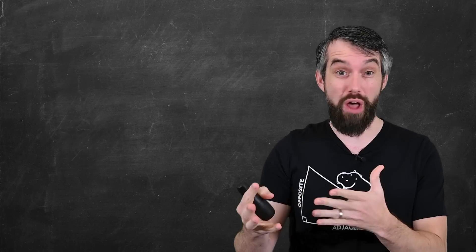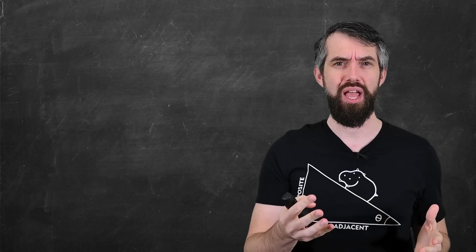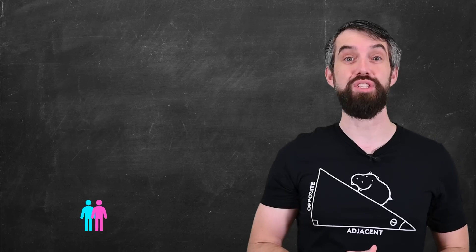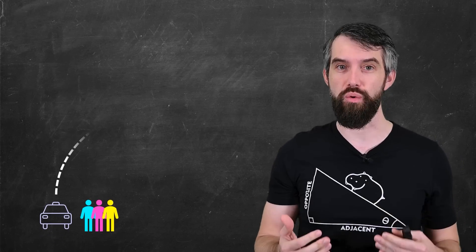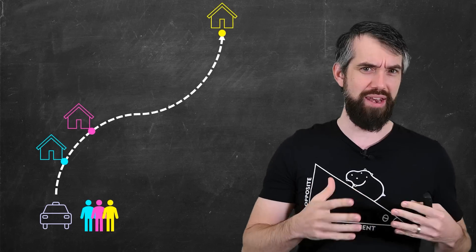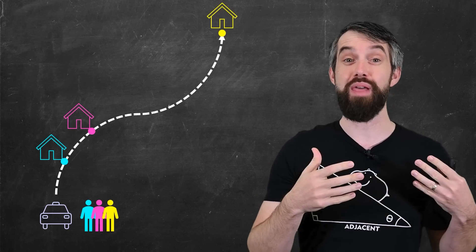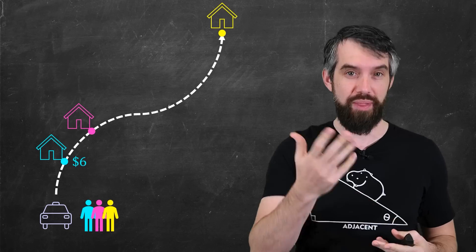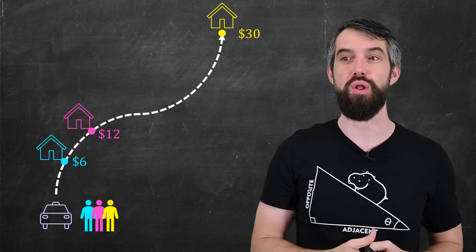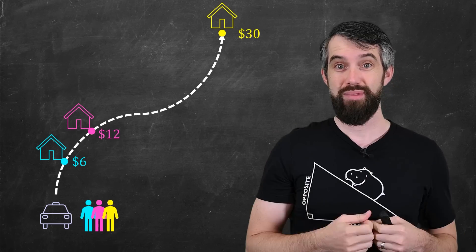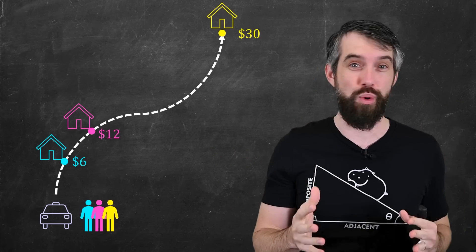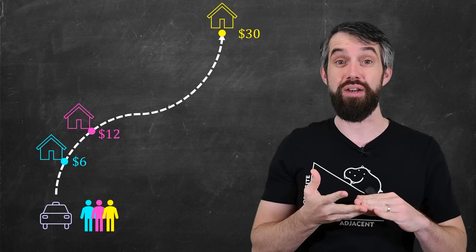How can we fairly divide up the profits or costs of an endeavor when everybody hasn't contributed equally? For example, suppose three friends are at a party and they're going to take a taxi to drive home. Along the road, not all houses are at the same spot. The taxi meter is $6 when they get to the first house, $12 when they get to the second house, and $30 when they get to the third house. How should these three people divide up this $30 bill?